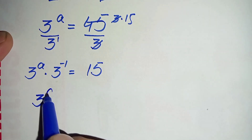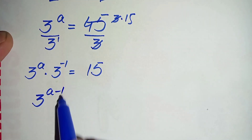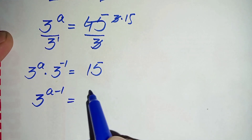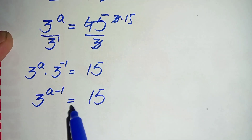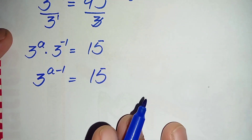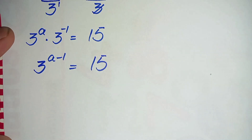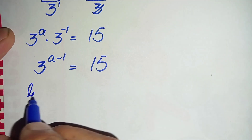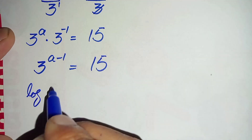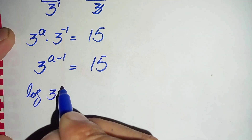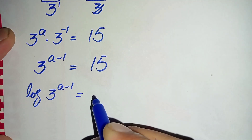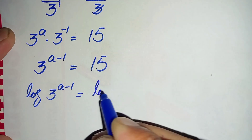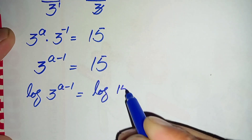Now we will take log on both sides. Taking common log on both sides: log of 3 to the power (a minus 1) is equal to log of 15.